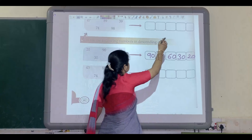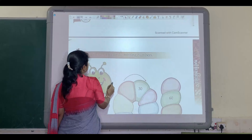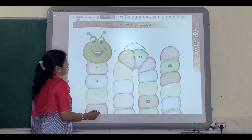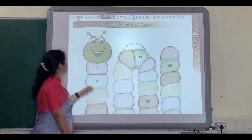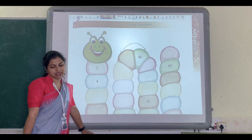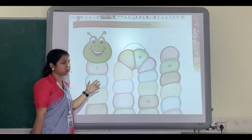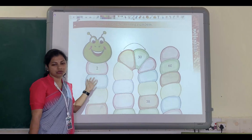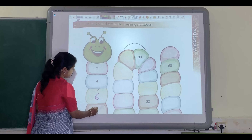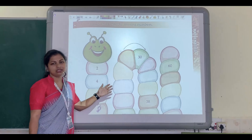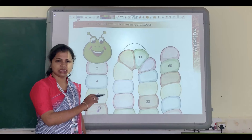Now let us see the next question. You have to count by 2s and write the missing number in this grid. What you have to do exactly is add 2 each time. For example: 2 plus 2 is 4, 4 plus 2 is 6, 6 plus 2 is 8, 8 plus 2 is 10, and so on. You have to write down numbers counting by 2s up to 62 in this grid.